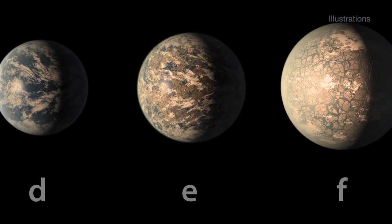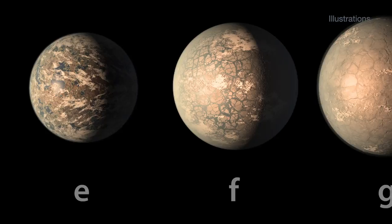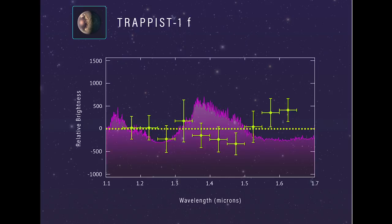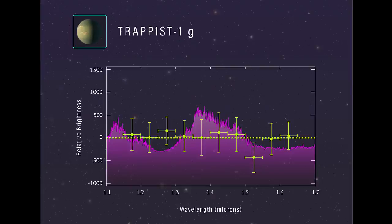Hubble then observed planets D, E, F, and G in December 2016 and January 2017 in near-infrared wavelengths, and the results were similar.